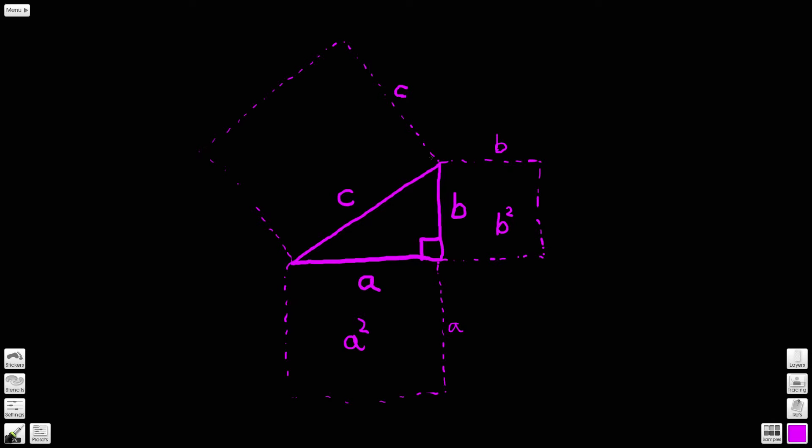And then the same up here - this length is side c and the length of this part measures the same as this length, so we can refer to this as c squared. The area of that will be c squared.